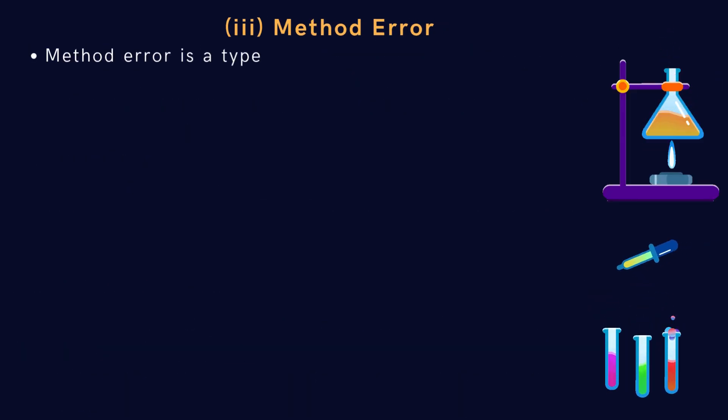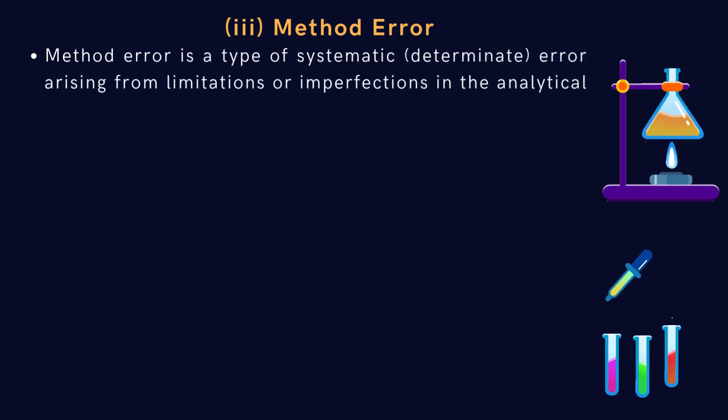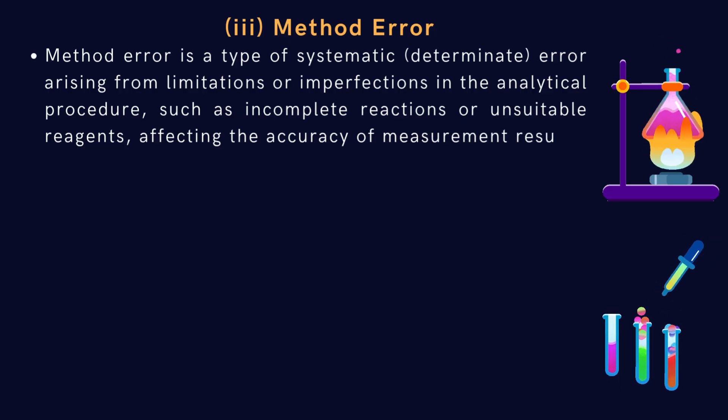Third type is method error. Method error is a type of systematic, determinate error arising from limitations or imperfections in the analytical procedure, such as incomplete reactions or unsuitable reagents, affecting the accuracy of measurement results.